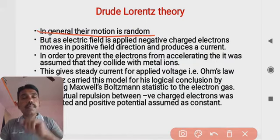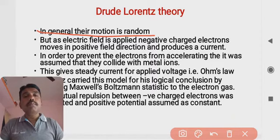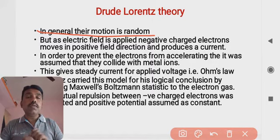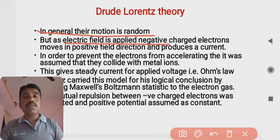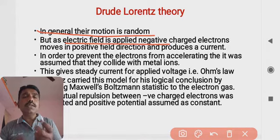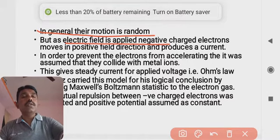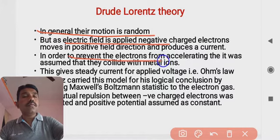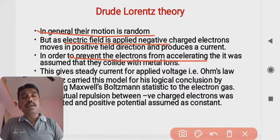Just as gas molecules have random zigzag motion, the free valence electrons inside the metal also have random motion. But when an electric field is applied to the metal, the negatively charged electrons move in the direction of the positive field, producing a current — in the opposite direction to electron flow.